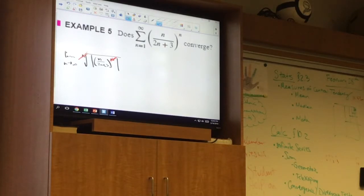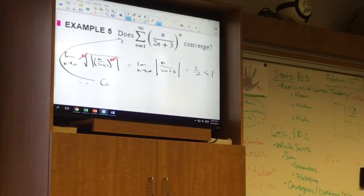And so really I just have that this is equal to. We'll leave the absolute value marks in there because it's not going to make a difference. What does this go to? The degrees are the same, so it's leading coefficient over leading coefficient. So it's just 1 half, which is less than 1. Therefore, this guy converges absolutely and therefore converges.